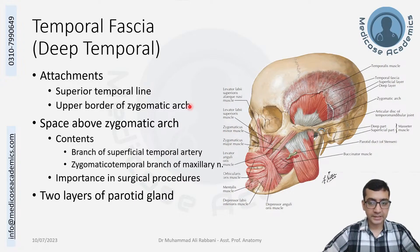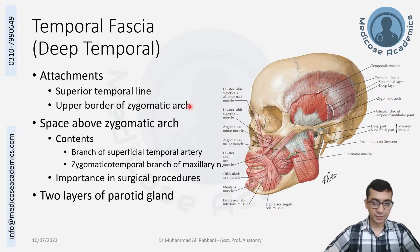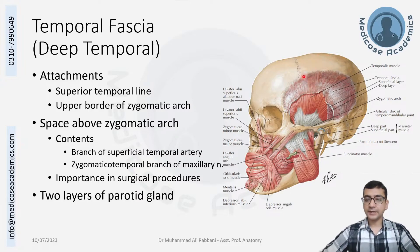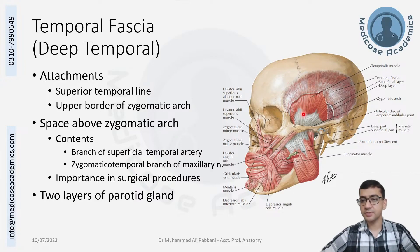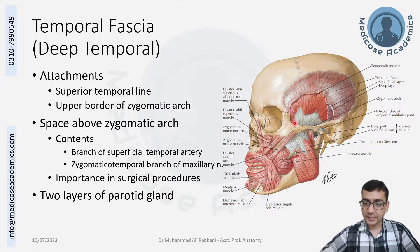Going from inside out: the temporalis fascia, the deep temporal fascia, is the one that covers the temporalis muscle. Its attachment mirrors that of the temporalis muscle — the temporalis muscle is attached to the inferior temporal line, while the fascia is attached to the superior temporal line. From there it goes down and attaches to the zygomatic arch.